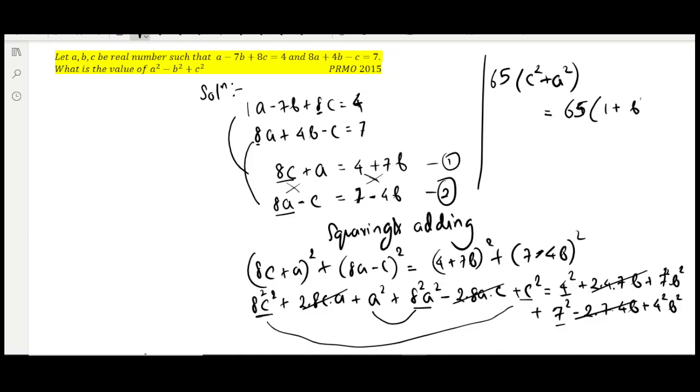What we are getting here is 65. Then 65 gets cancelled, so we are likely getting the answer. So a square plus c square minus b square equals 1.